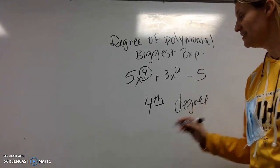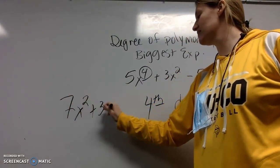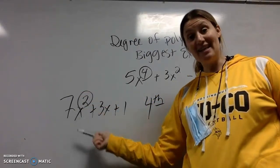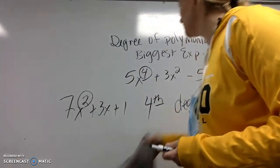So this is a fourth degree polynomial. That's really all it is. If I have 7x squared plus 3x plus 1, that's a 2. So this is a second degree polynomial. So you just look for the biggest exponent.